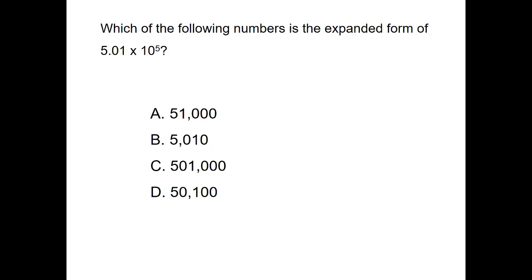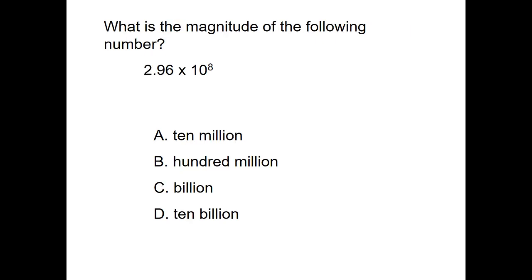Let's go over a couple questions to make sure you understand this. For 5.01 times 10 to the fifth, the answer is C. Ten to the fifth is two up from ten to the third, which is a thousand, so this is a hundred thousand — making it 501,000. For the next question, 2.96 times 10 to the eighth: ten to the eighth is a hundred million, so the answer is B — you would read it as 296 million.